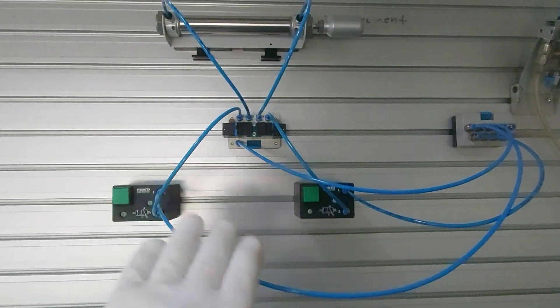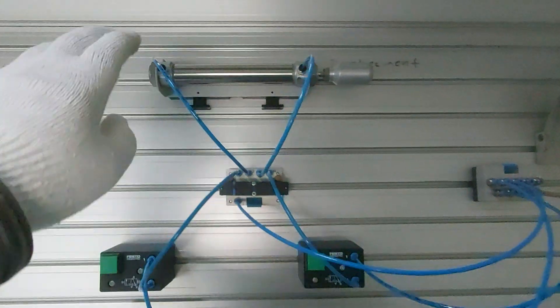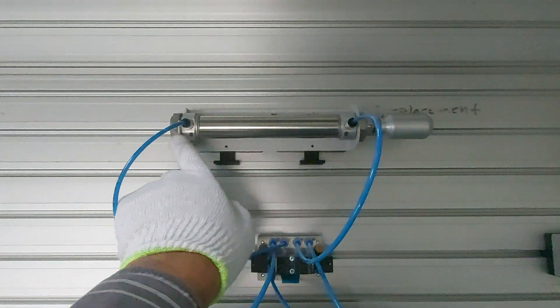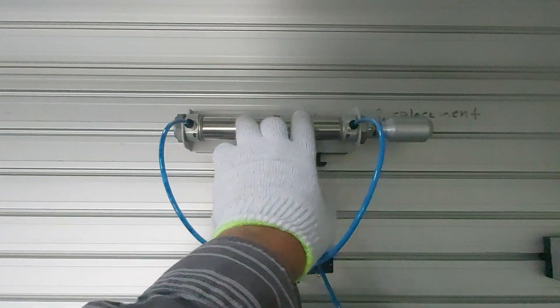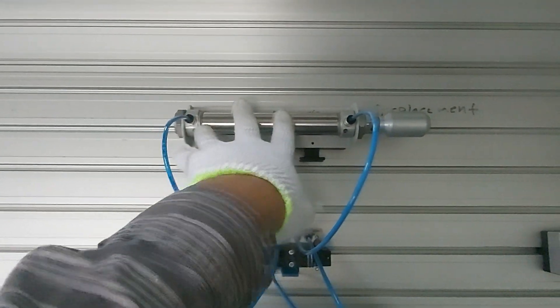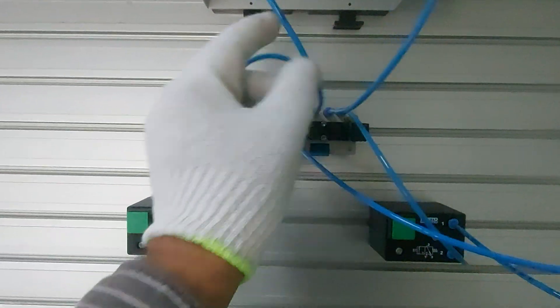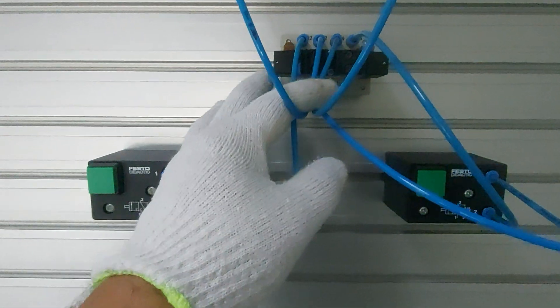So in actual, the circuit looks like this. You have double acting cylinder. It has 2 ports. Unlike the single cylinder, it has only 1 port and 1 exhaust. It has 2 ports. So it needs 2 outputs. That is from the 5x2 double pilot. That is 2 and 4.